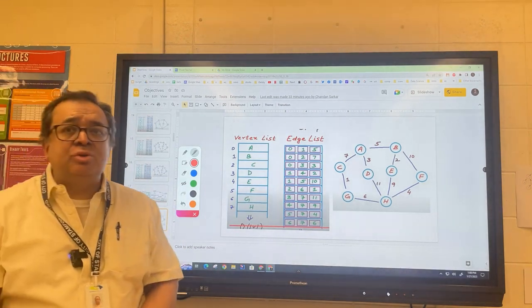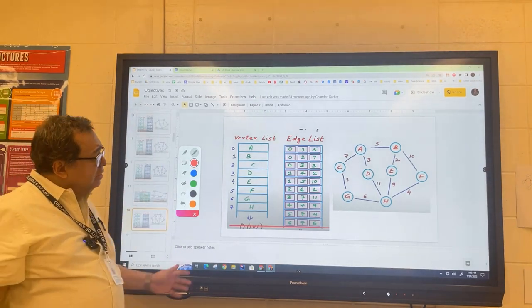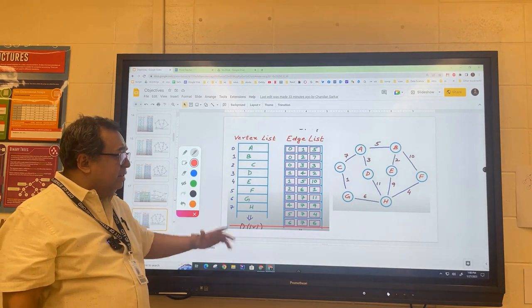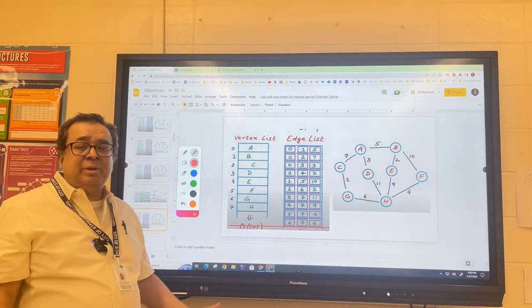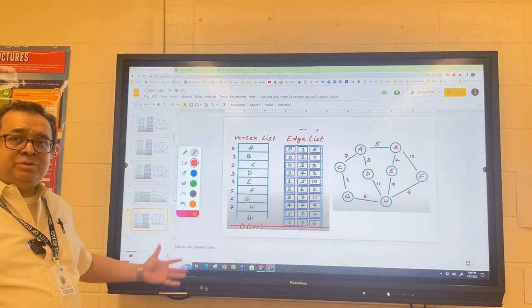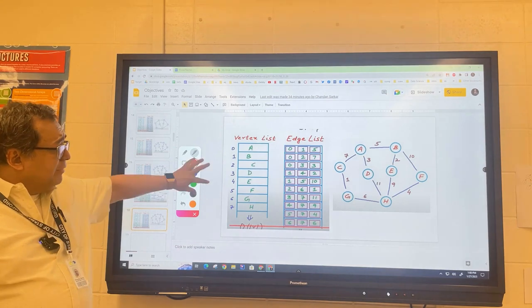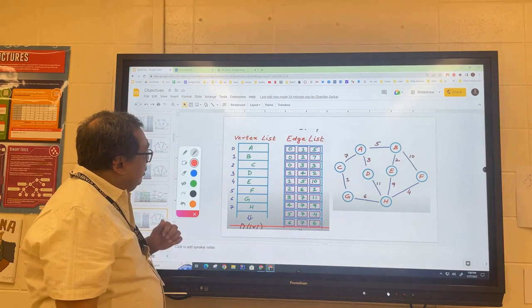What would you do if you needed to have some sort of data structure where I could give it a letter like C and tell it that the number for that is two? That would be a perfect example of how you could use a map. Would we use a hash map or a tree map here? We don't care about the ordering, so we would want to use a hash map here.